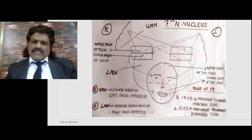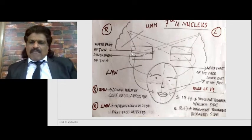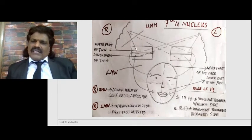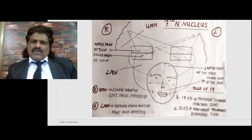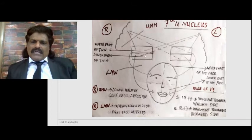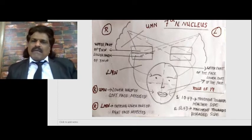The seventh cranial nerve nucleus has an upper part and lower part on each side. The upper part supplies the upper part of the face; the lower part supplies the lower part of the face. Like all other cranial nerves, the upper part gets bilateral innervation - corticobulbar fibers from the same side as well as from the opposite side. But the lower part gets supply only from the opposite side - it does not get bilateral innervation. That is the critical difference.